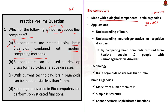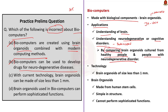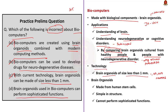The second option says biocomputers can be used to develop drugs for neurodegenerative diseases — this is also correct. Biocomputers are created to understand the human brain and will help understand neurodegenerative or cognitive disorders like Alzheimer's or Parkinson's. Brain organoids are cultured from healthy individuals and from people with neurodegenerative disorders separately. By comparing data on brain structure, connections, and signaling between healthy and patient-derived organoids, researchers can understand why neurodegenerative diseases occur and how they can be prevented. The third option — that brain organoids can be made of size less than 1 millimeter — is also correct.